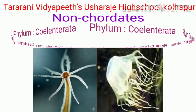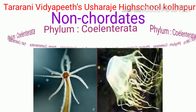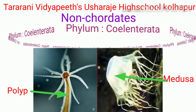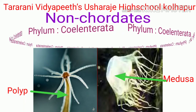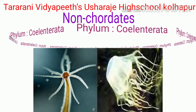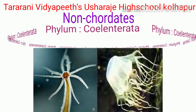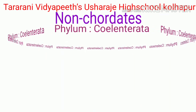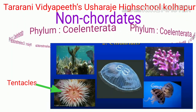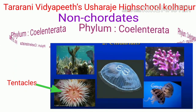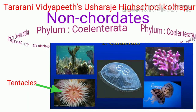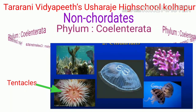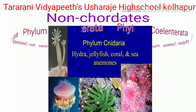Phylum Coelenterata or Cnidaria: the body of these animals is cylindrical or umbrella-like. If cylindrical, it is called a polyp; if umbrella-like, it is called a medusa. Most are marine; only a few are freshwater dwellers. The body is radially symmetrical and diploblastic. Cnidoblast-bearing tentacles are present around the mouth. Tentacles are useful for capturing prey, whereas cnidoblasts inject toxin into the body of prey and also provide protection.